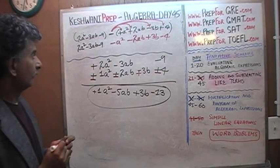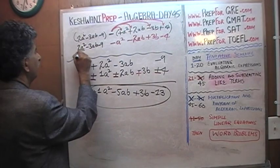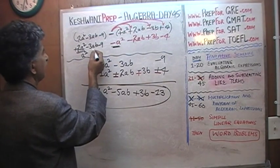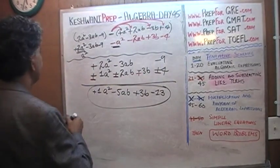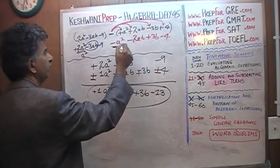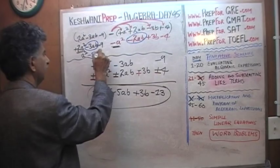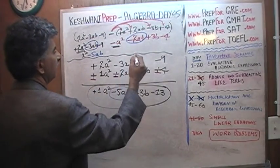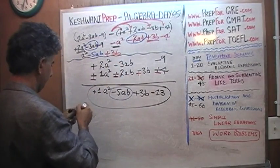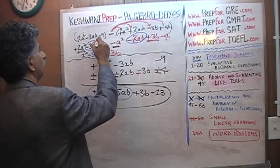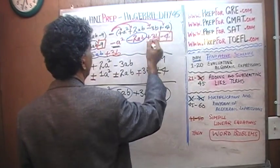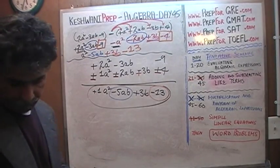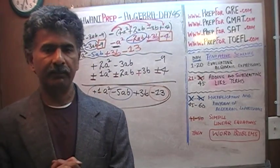Now we simply simplify. We have positive 2a squared and negative a squared — positive 2 minus 1 gives a squared. Then negative 3ab and negative 2ab — negative 3 plus negative 2 gives negative 5ab. We get positive 3b since there is no lone b on the other side. And negative 9 plus negative 4 gives negative 13. We get the same answer, of course — they are just two different methods.